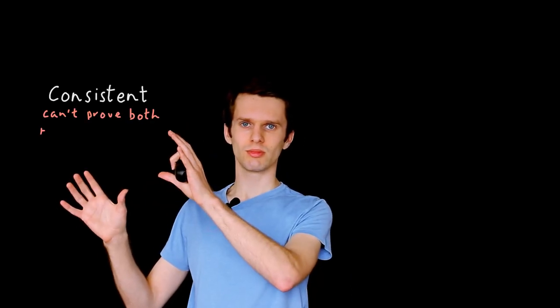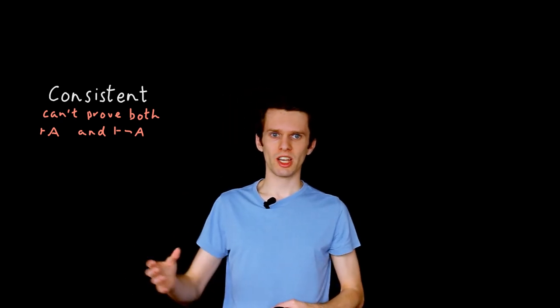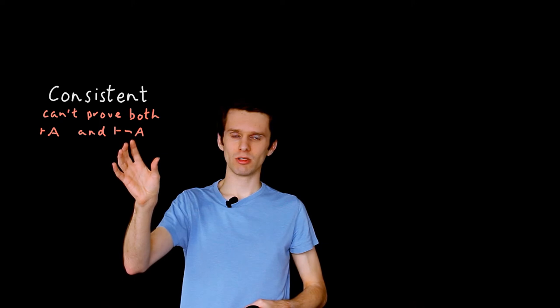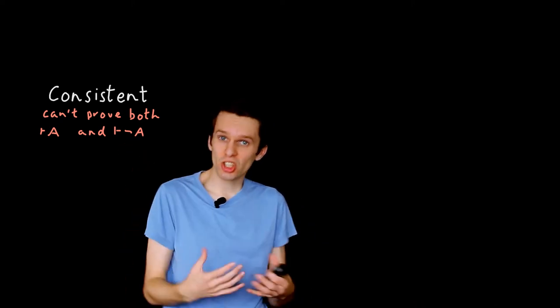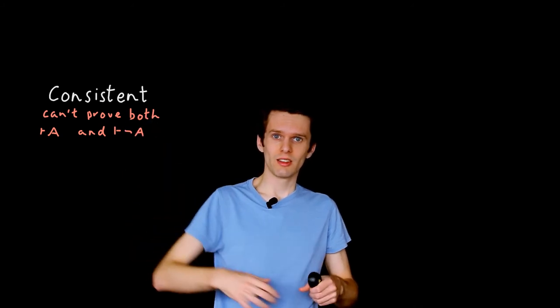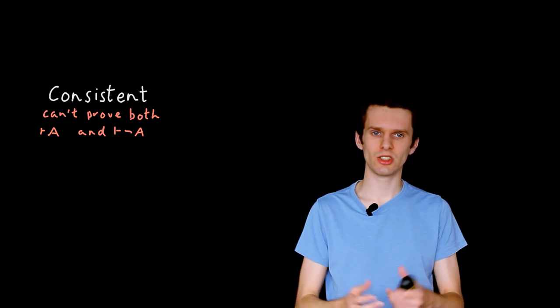The first is a common one, and it's called consistency. And it's saying that we, in our logic, we don't want to be able to prove both A and not A. It turns out that if we do have a logic that allows us to do this, then we can prove absolutely anything. Any sentence is true.